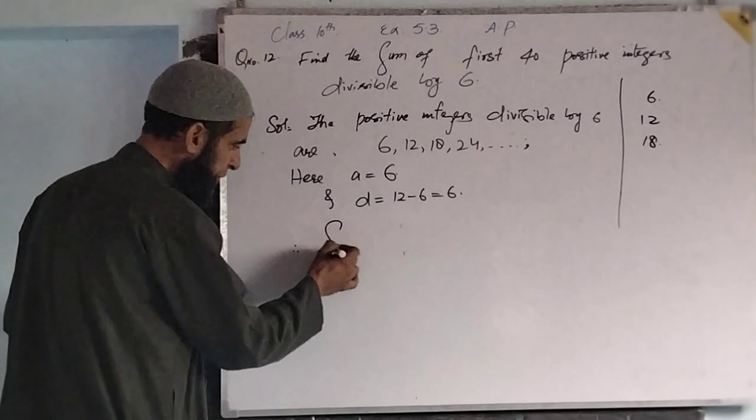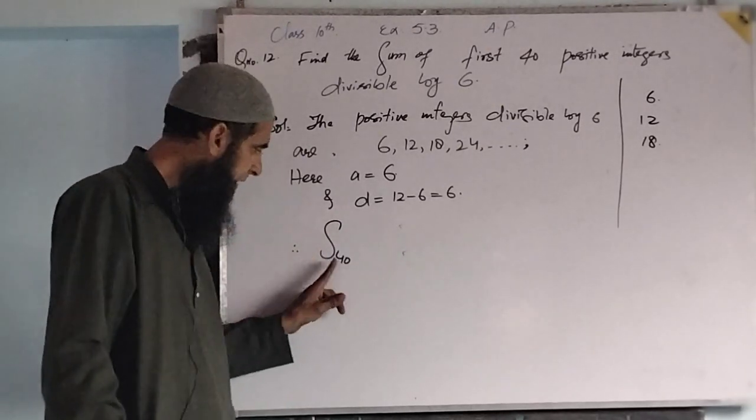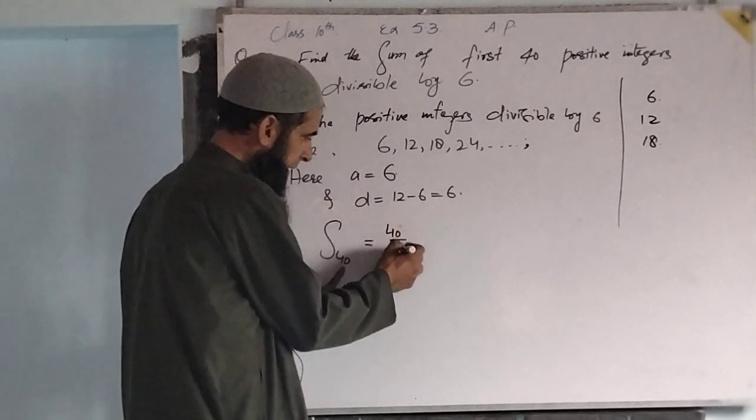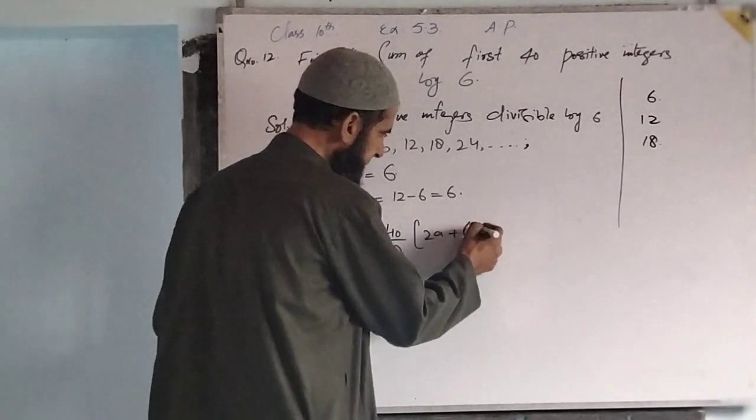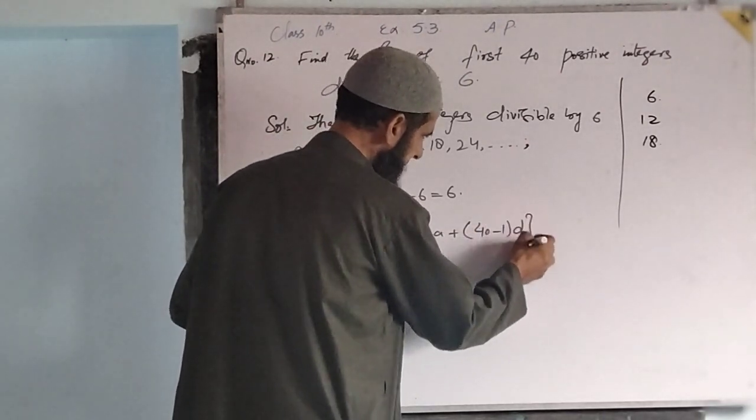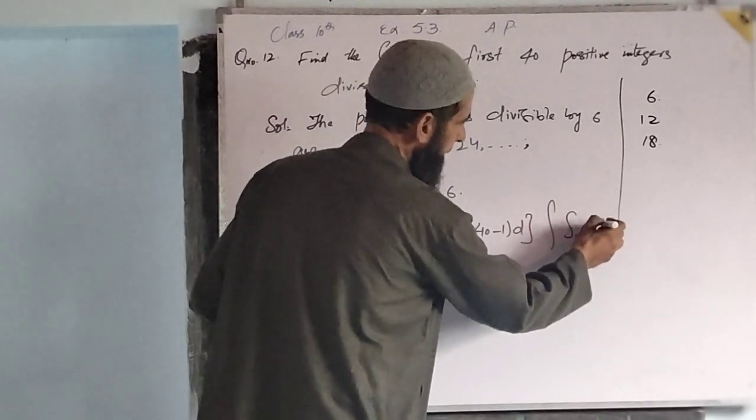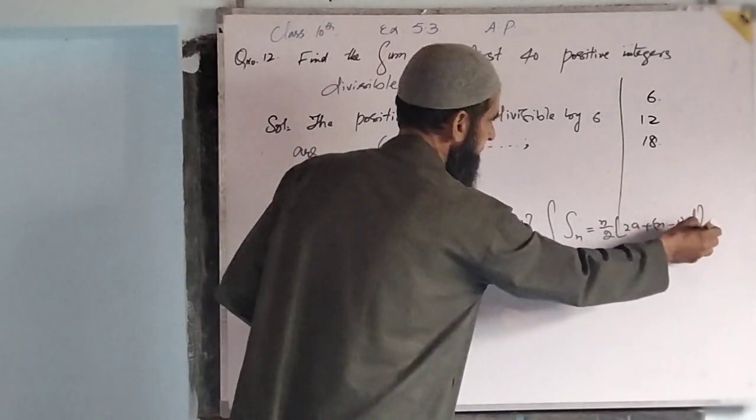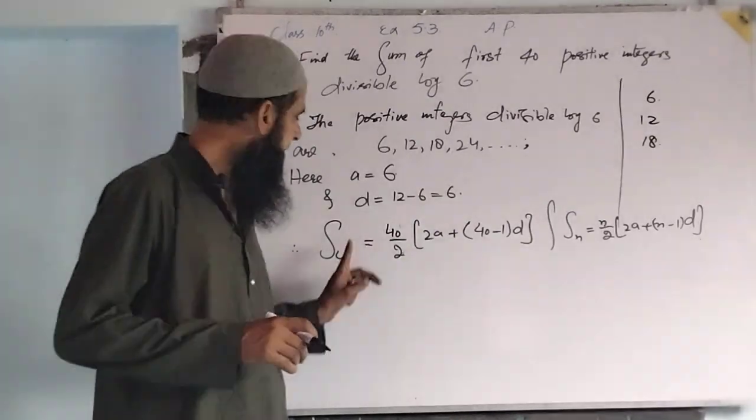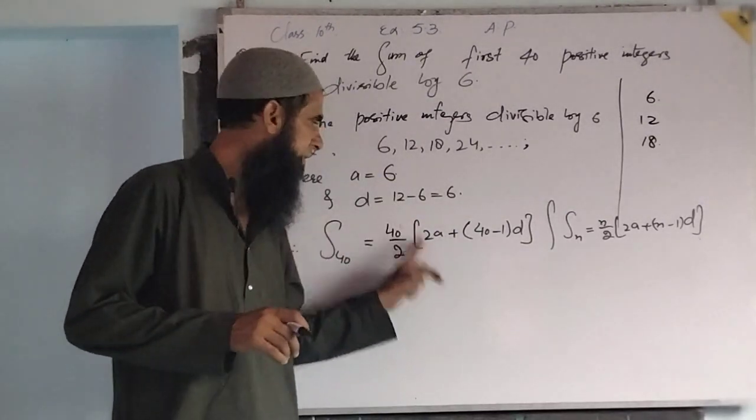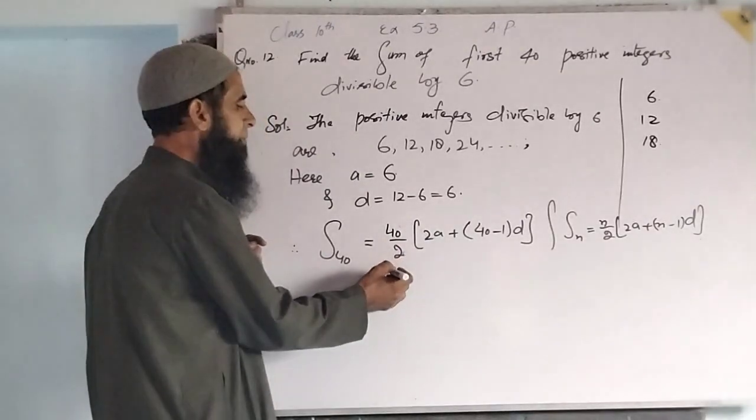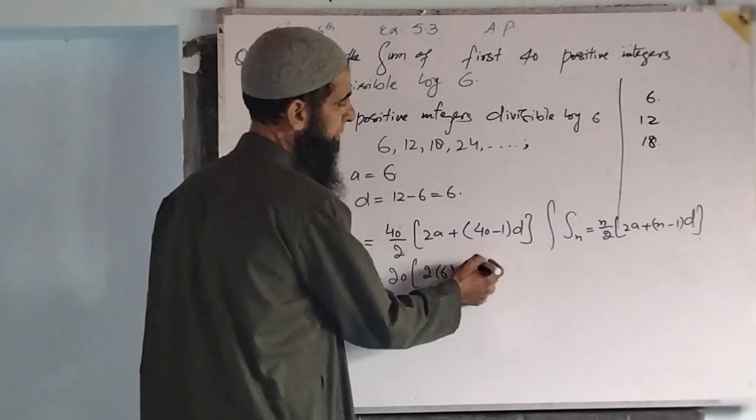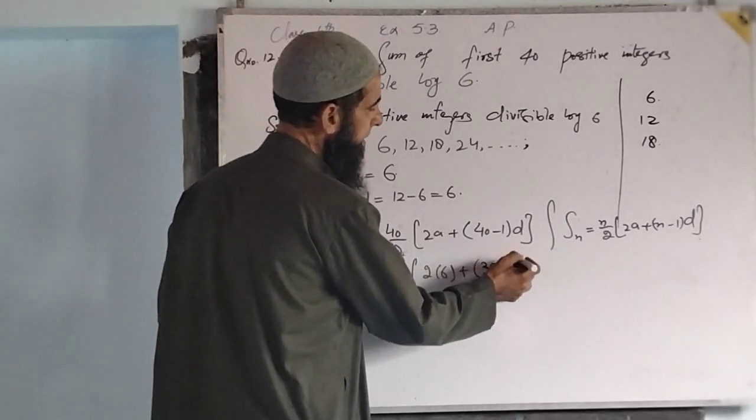Therefore S_40, that is sum of first 40 terms, is equal to 40 by 2 into 2a plus 40 minus 1 into d. Dear students, we have sum of 40 terms is equal to 40 by 2, that is 20, into 2 into a that is 2 into 6 plus 40 minus 1 that is 39 into d which is 6.